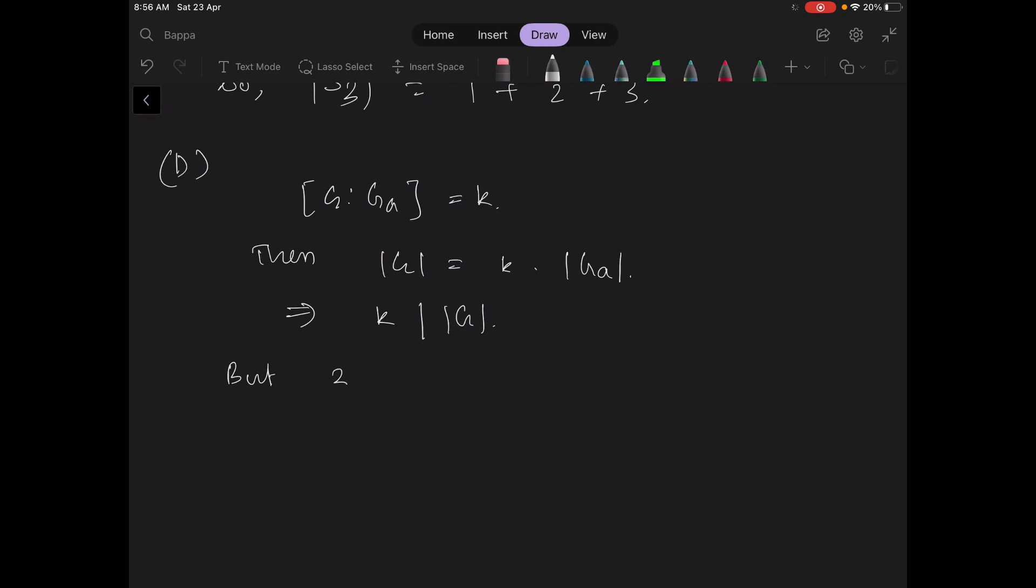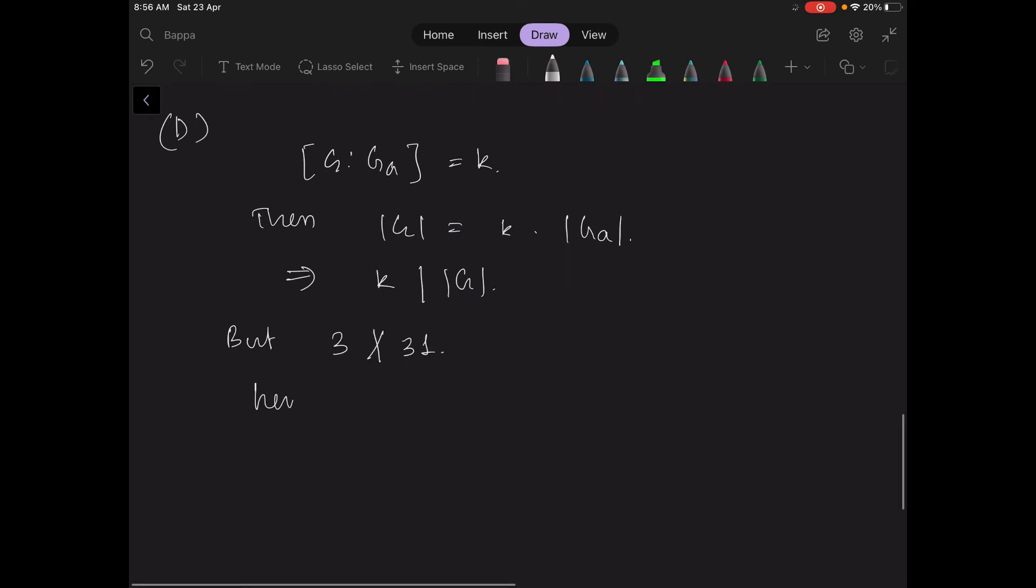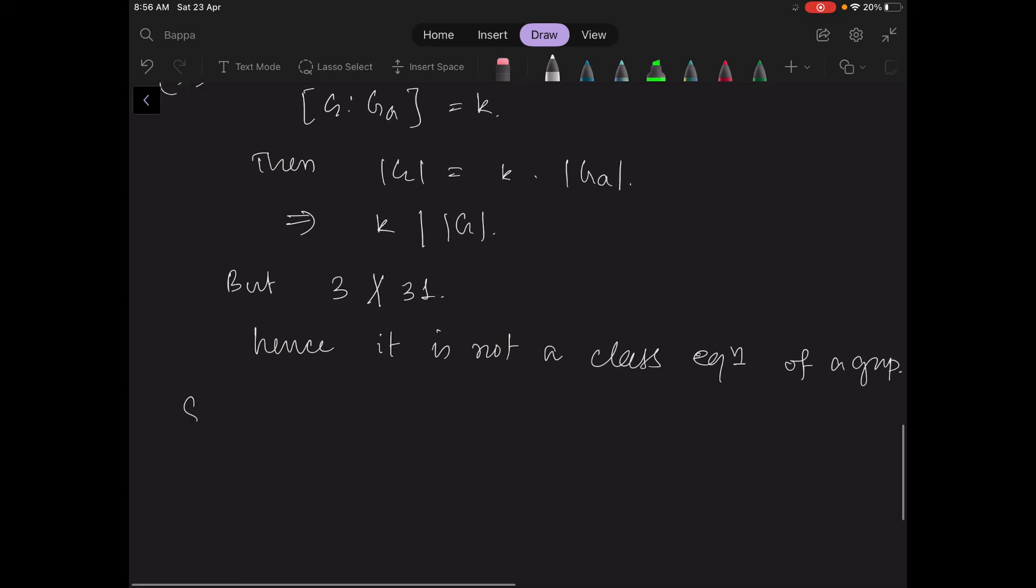But 3 does not divide 31, hence it is not a class equation of a group. So options A, B, and D are correct—these are not class equations of a group.